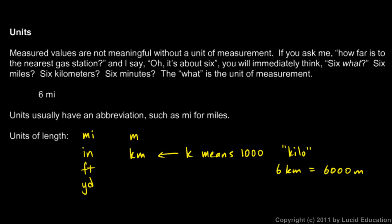That K is an example of what we call a metric prefix. You've probably heard of centimeters, CM — the C is just an abbreviation for centi, which means 1/100. Or millimeters, MM — milli is an abbreviation for 1/1000.